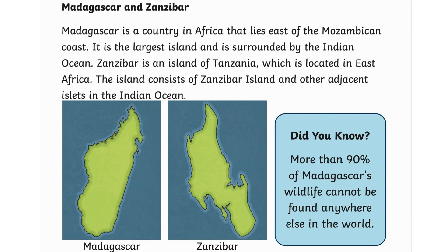Madagascar and Zanzibar. Madagascar is a country in Africa that lies east of the Mozambican coast. It is the largest island and is surrounded by the Indian Ocean. Zanzibar is an island of Tanzania located in East Africa. The island consists of Zanzibar Island and other adjacent islets in the Indian Ocean. Did you know? More than 90% of Madagascar's wildlife cannot be found anywhere else in the world.